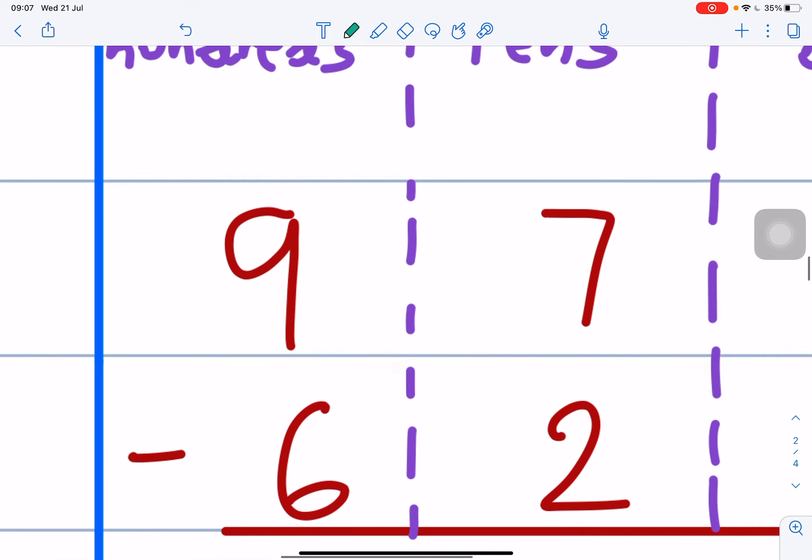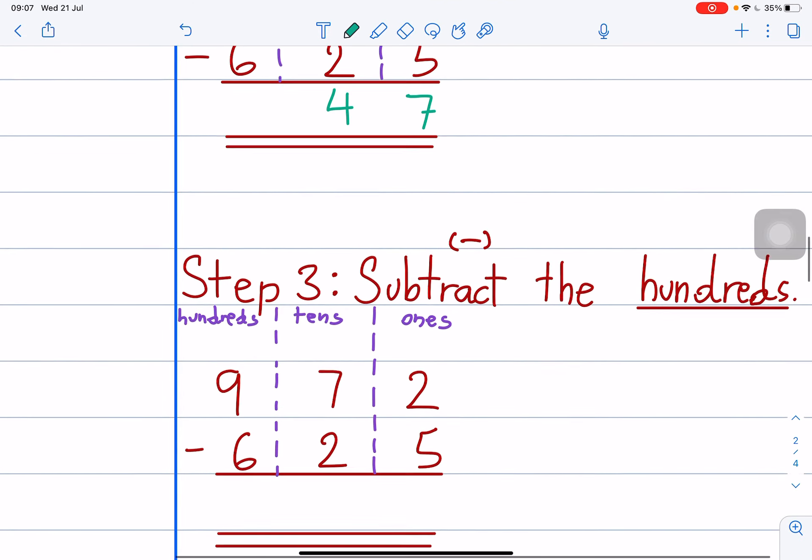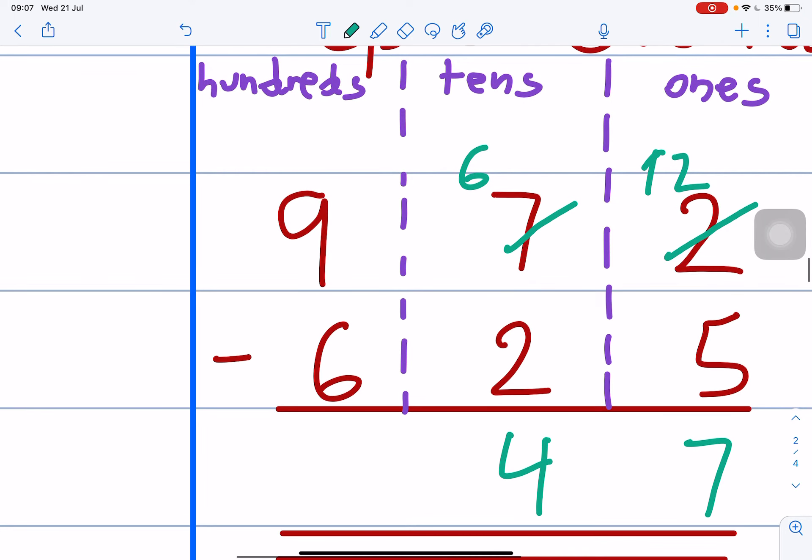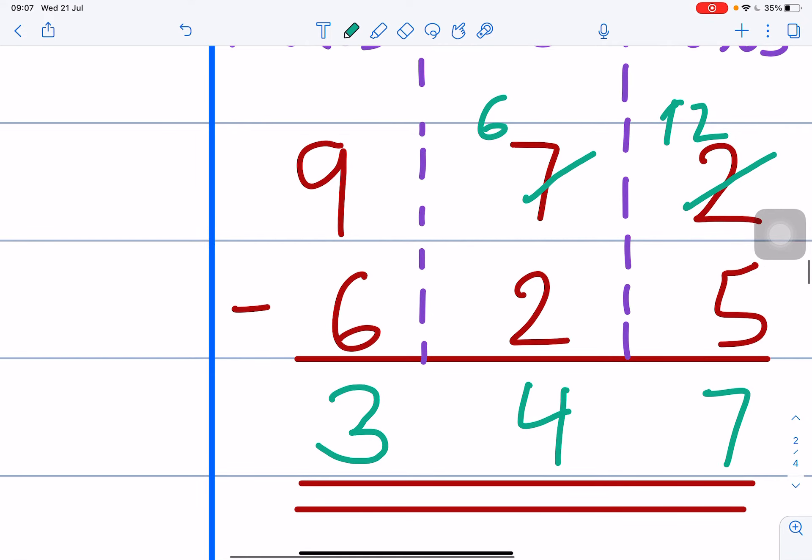Step 3, hundreds. Minus the hundreds. So, 4, 7, 8, cut, 12, cut, 6. Okay. So, 9 minus 6. No borrow. No borrow. So, 9 minus 6 is equals to 9, 8, 7, 6, 5, 4, 3. 3. Okay. 3. So, your answer is 347.